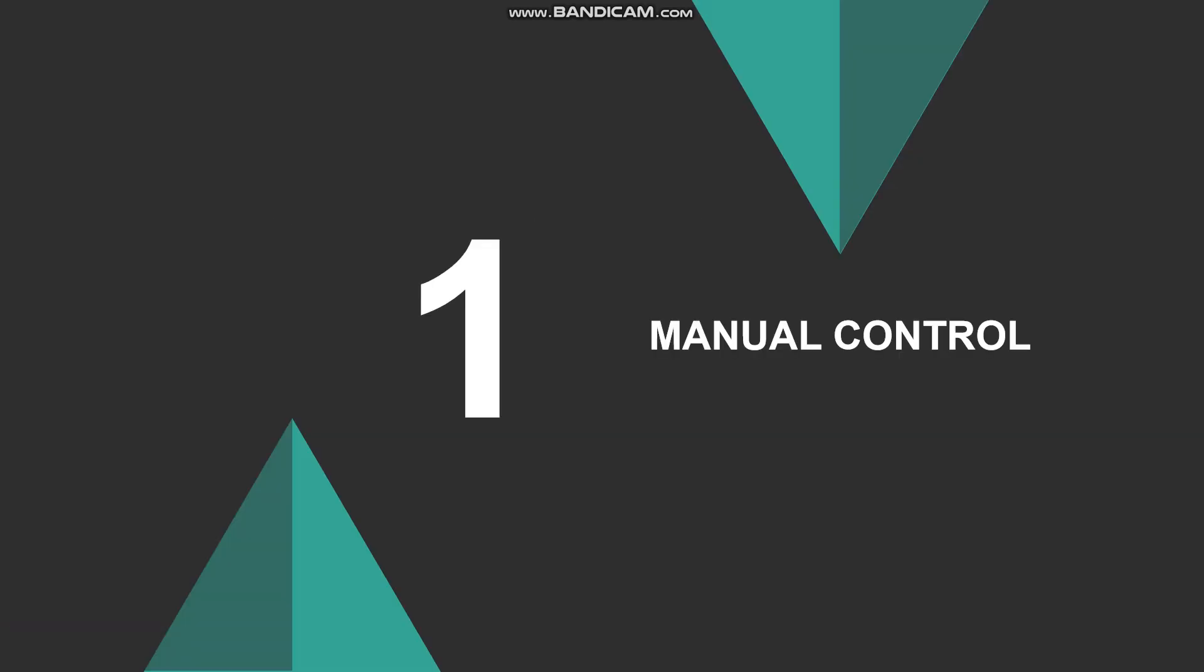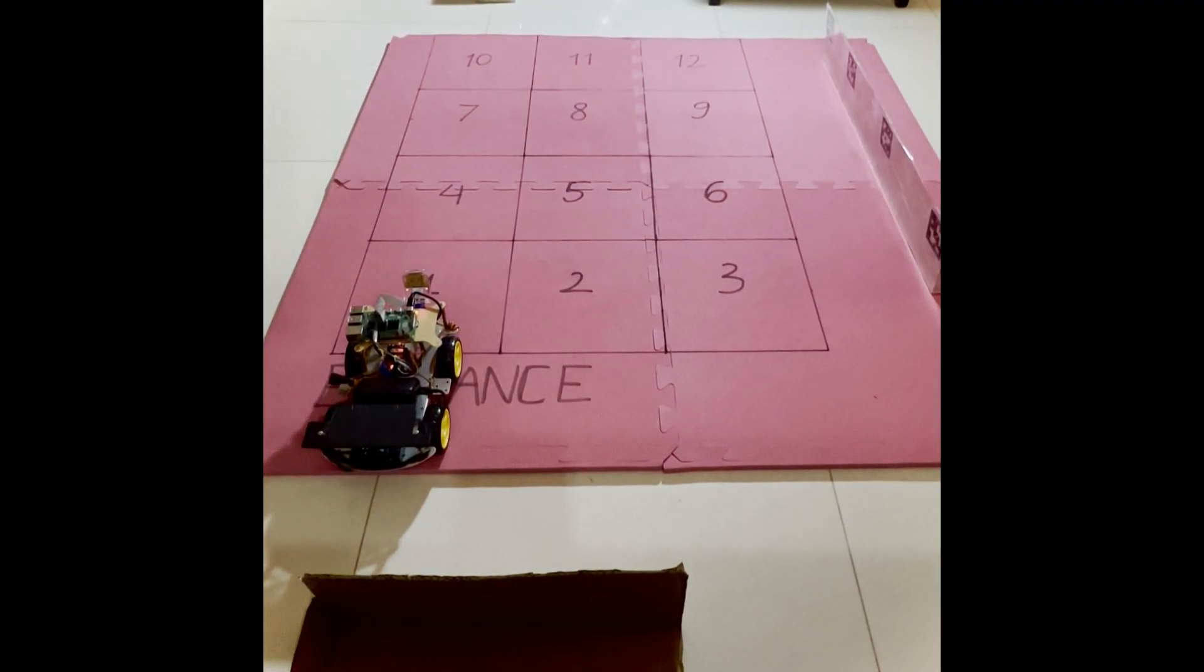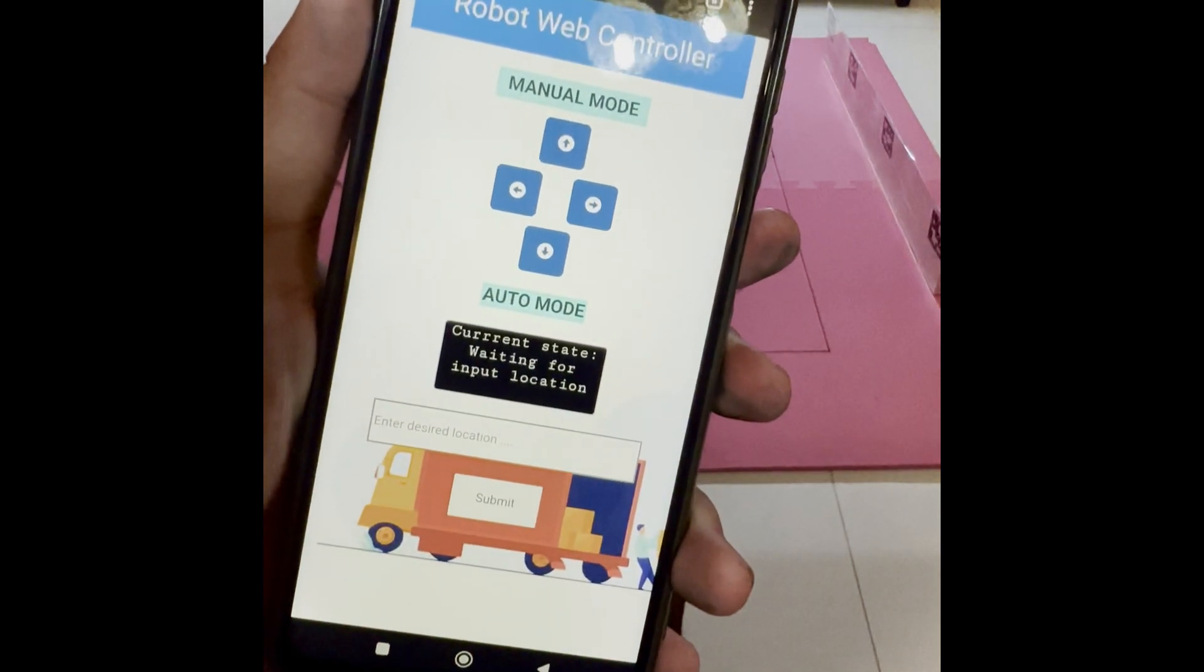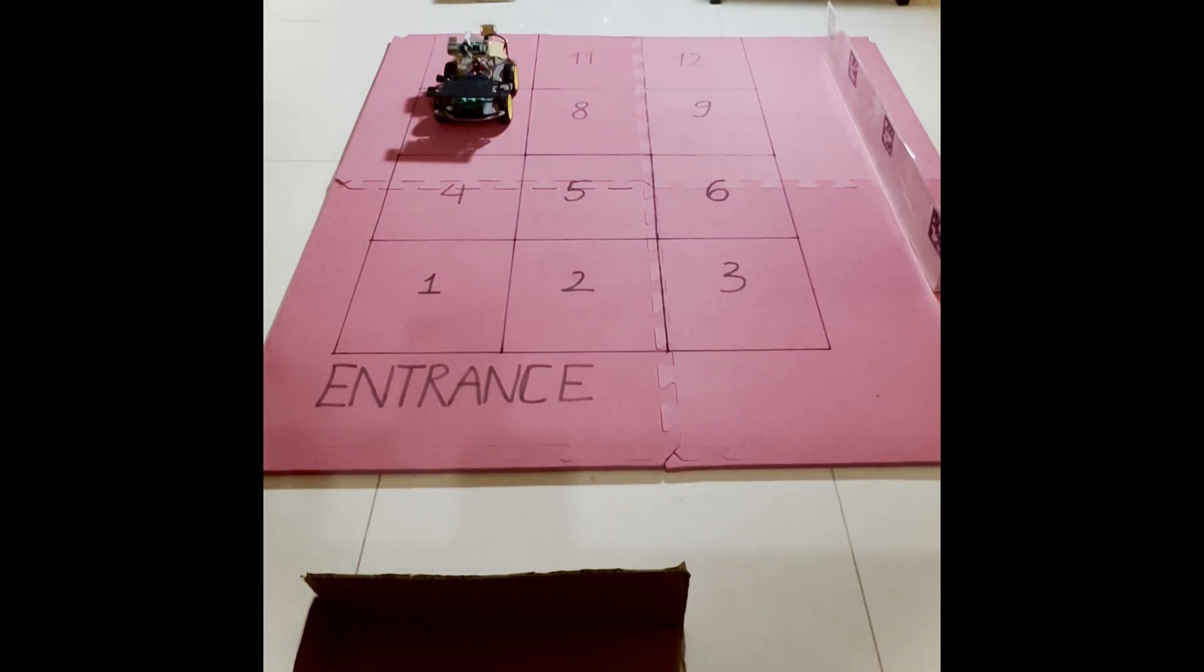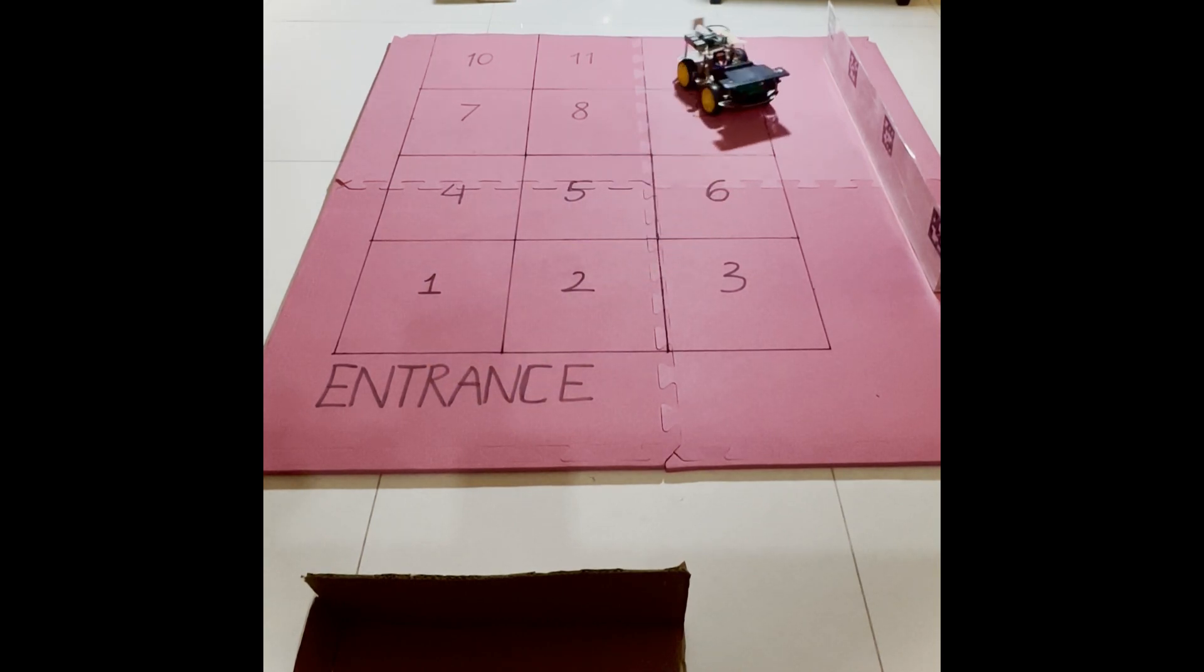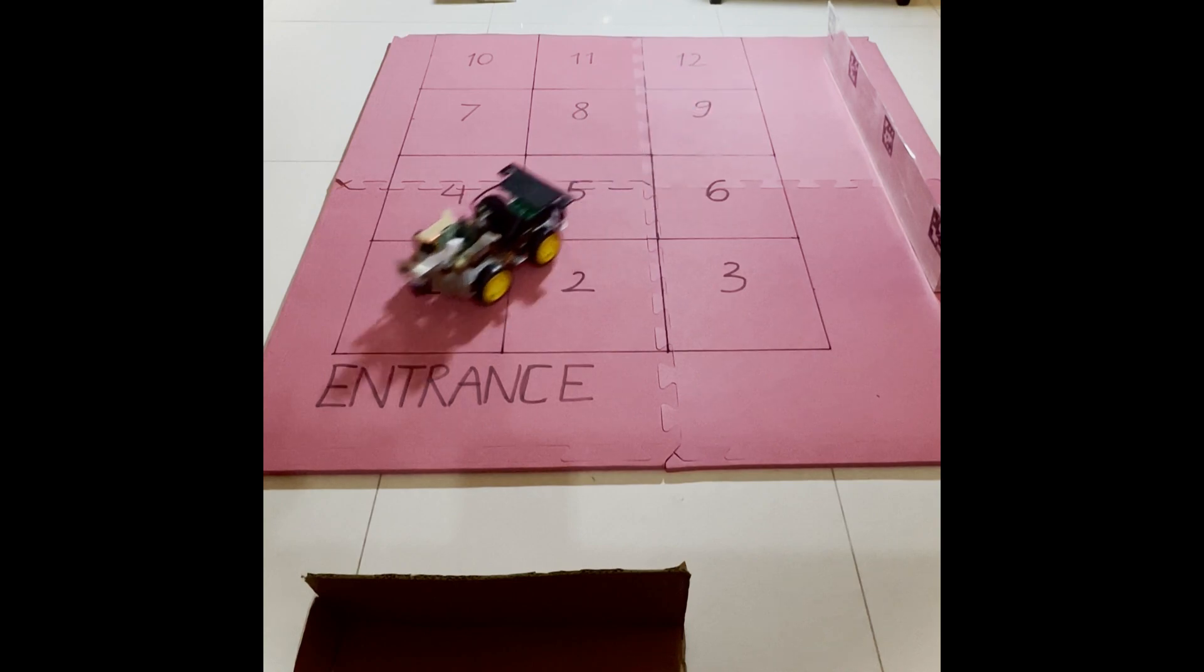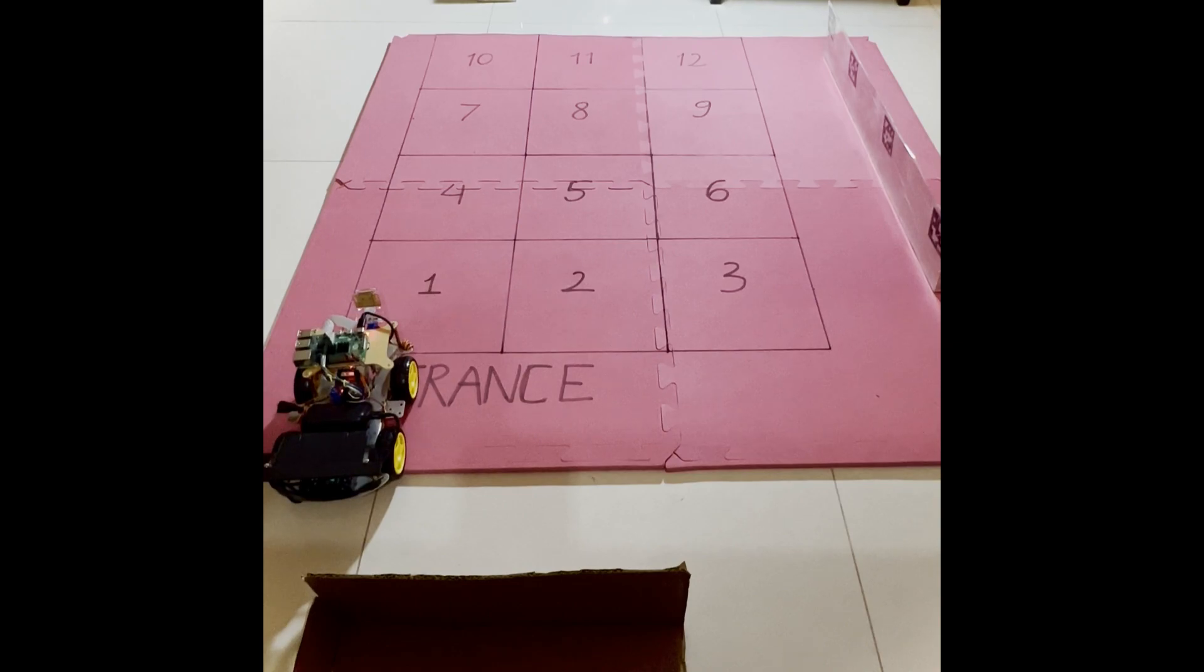In the first scenario, manual controls are tested. In order to control our robot, we use a user interface with four buttons: forward, backward, turn left, and turn right. The working field of the robot is divided into 12 locations.